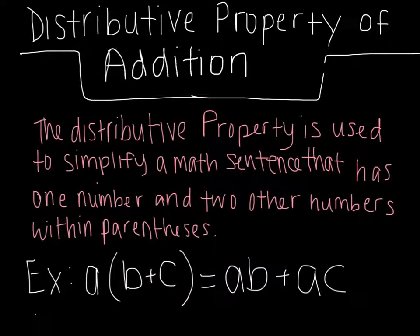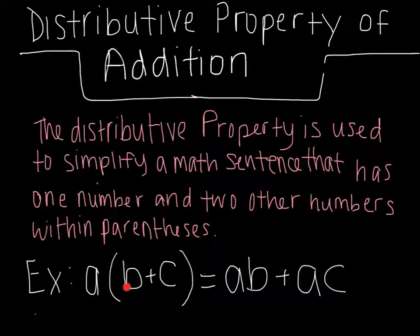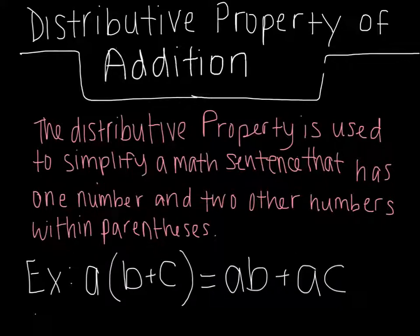Let's start off with the distributive property of addition. The distributive property is used to simplify a math sentence that has one number and two other numbers within parentheses. An example would be a times (b plus c) is equal to a times b plus a times c. Basically, all you're doing is distributing a to b and a to c.